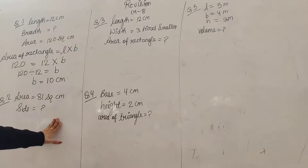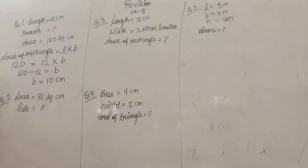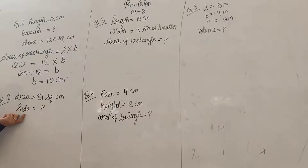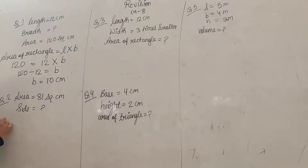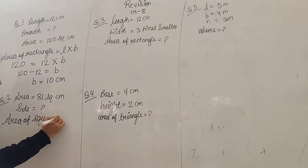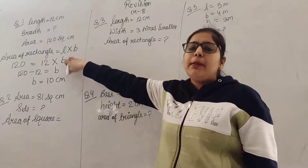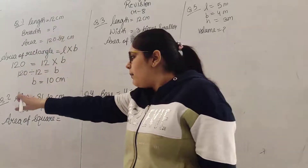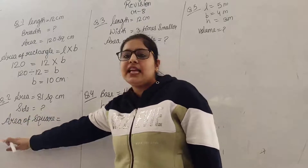Same with, given question — मैंने आपको कल भी कराया. Area है हमारा 81 square cm, और हमें side find करनी है. तो अब क्या करूँगी — area के साथ side given है, इसका मतलब बात किसकी हो रही है: area of square की. जब length और breadth की बात थी तो area of rectangle की बात थी. When we have side, we have automatically found that this is area of square.